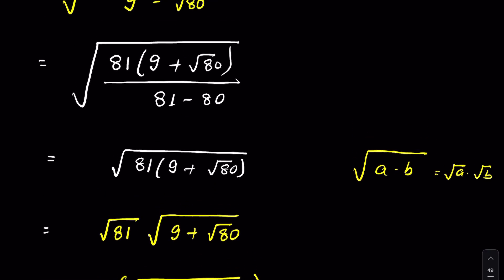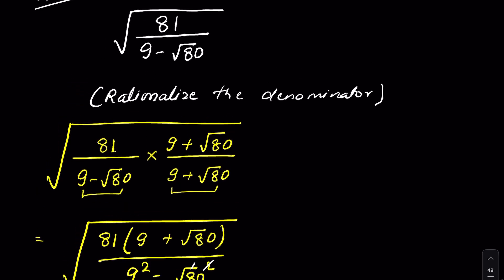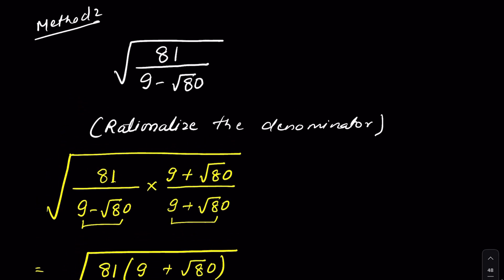So the answer is 9(√5 + 2). Which method did you like more — which was faster? Let me know in the comment section. Thanks for watching.